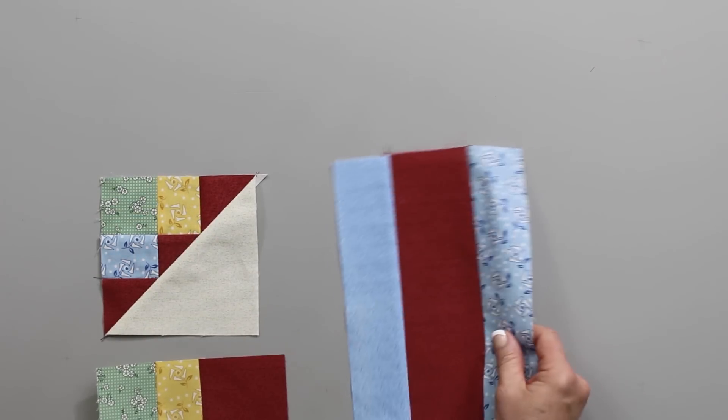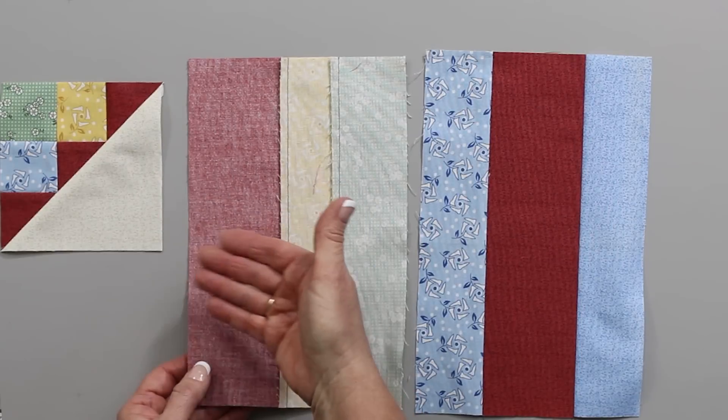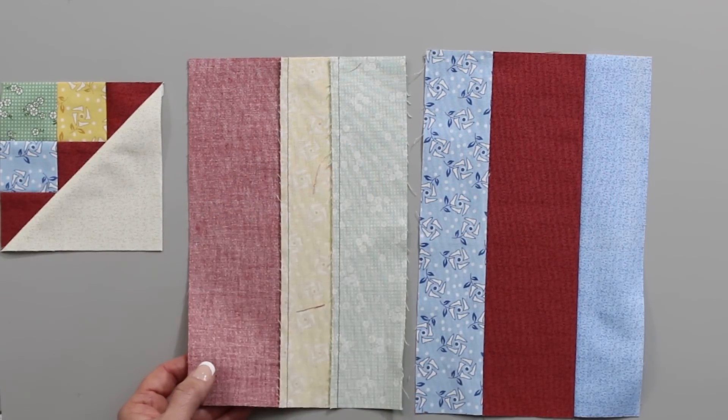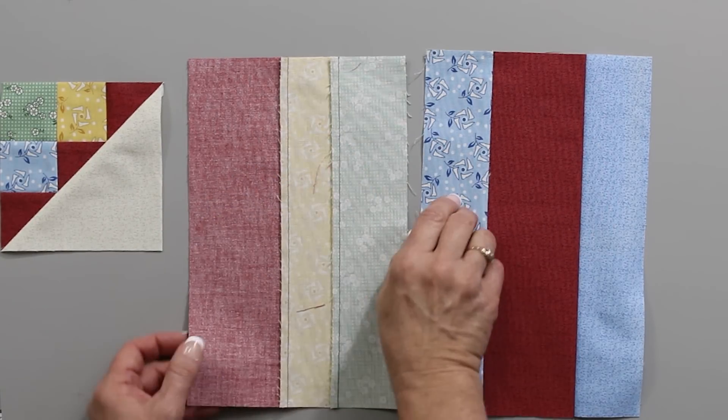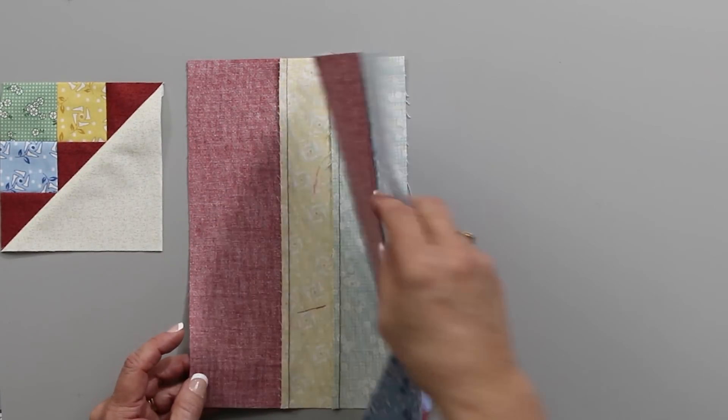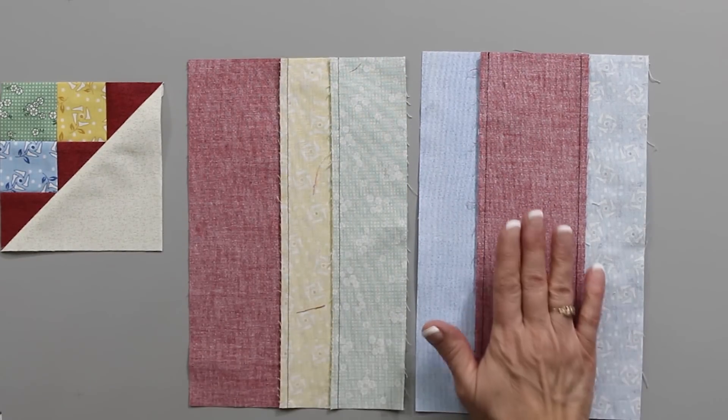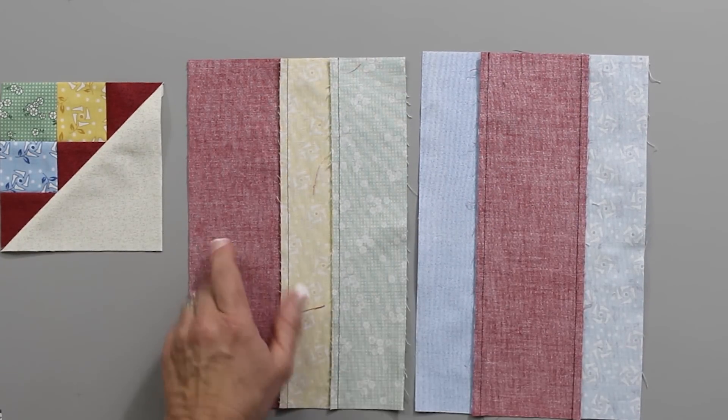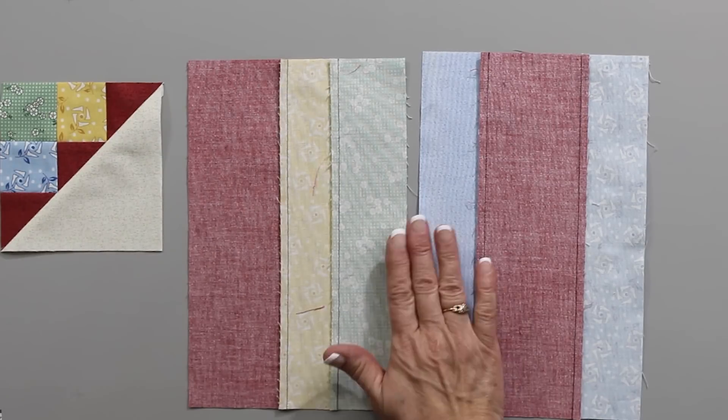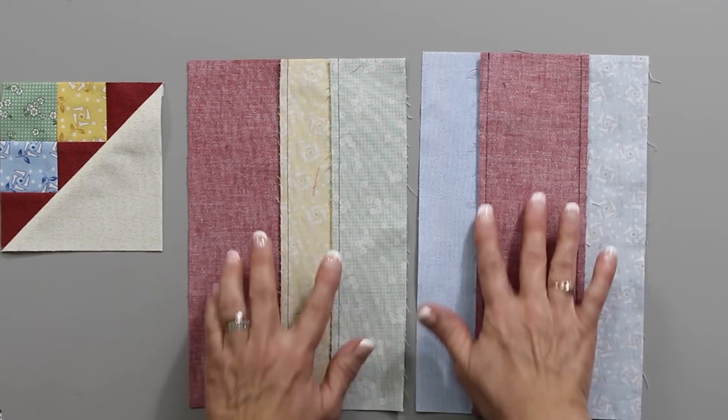Once they're sewn, you're going to press them. Follow the pressing. On strip set one, all of your seams will be pressed going toward the larger strip. That's actually strip number three. When you are pressing strip number four, press those seams away from the widest strip. So strip set one towards the largest, strip set two away from the largest strip.